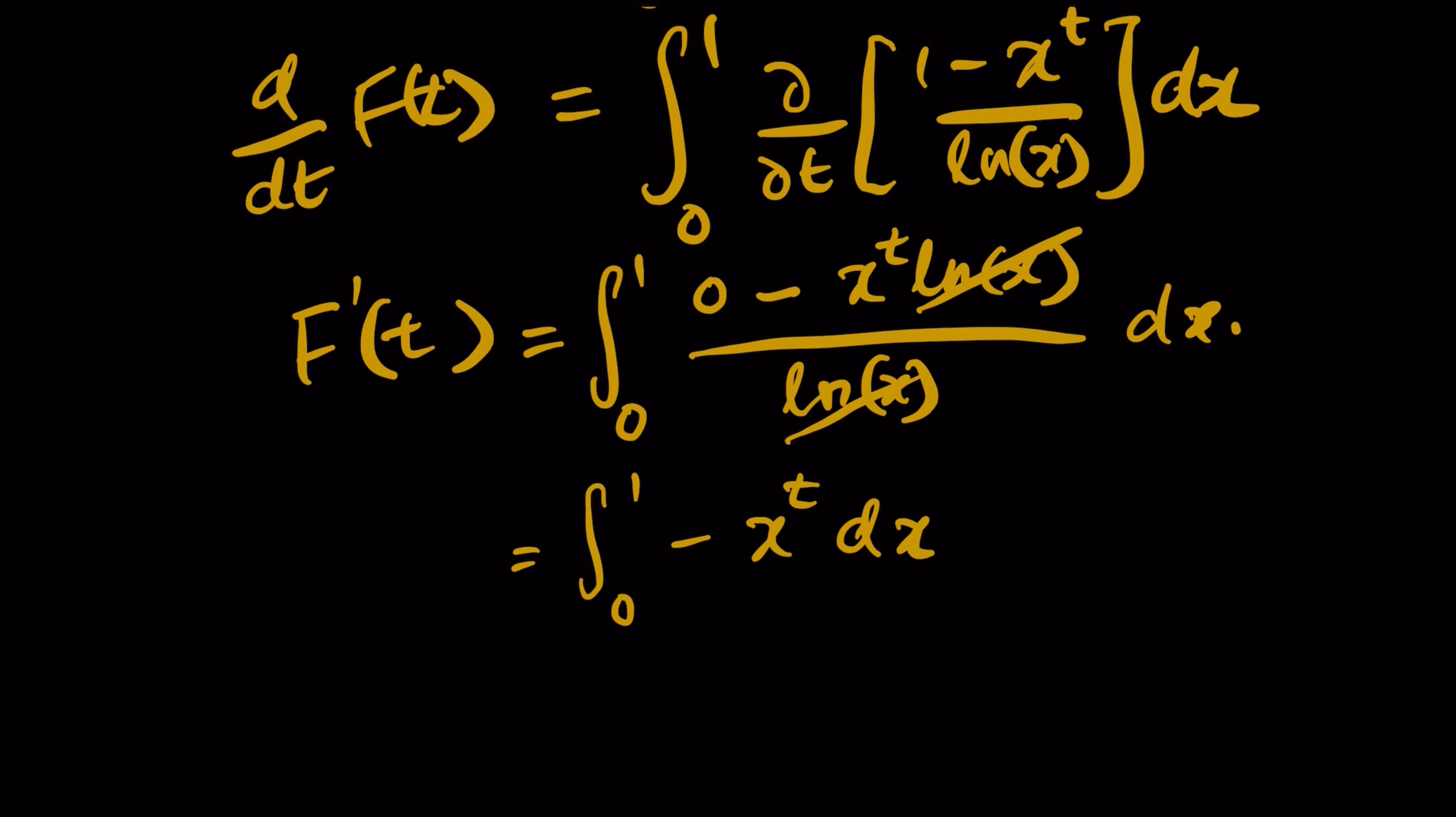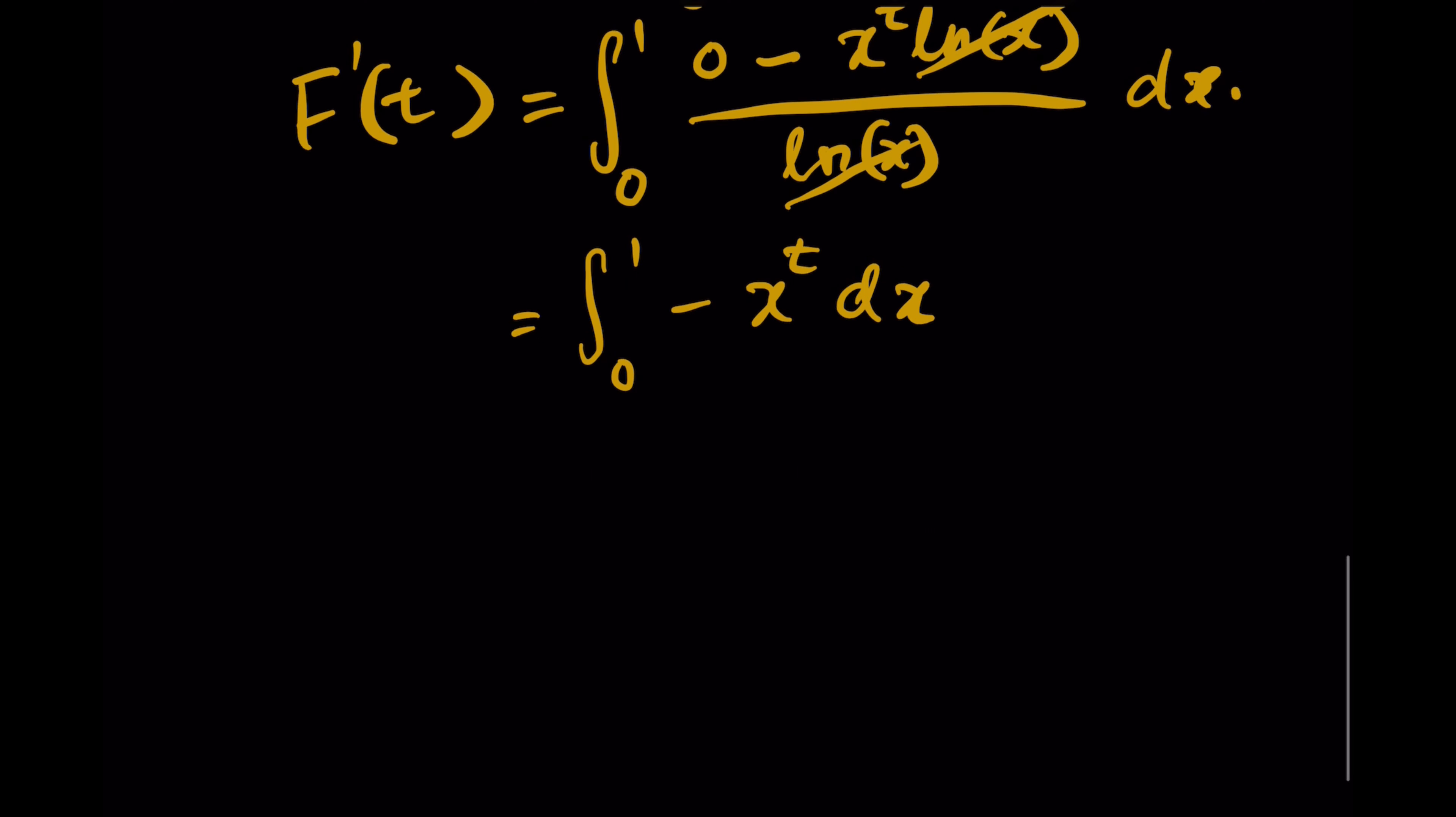Now we're going to deal with the integration over dx, which is pretty direct. It is negative x^(t+1) over (t+1), evaluated from 0 to 1.